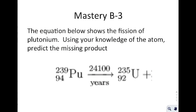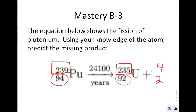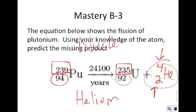The last slide says: the equation shows the fission of plutonium. Using your knowledge of the atom, predict the missing product. We know you can't create or destroy particles — conservation of mass. This indicates a total mass of 239 and a total mass of 235, so you're missing 4 for the atomic mass. Looking at protons: 94 protons on one side and 92 on the other — you're short 2 protons. With an atomic mass of 4 and atomic number of 2, that indicates a helium atom. This is an example of a nuclear reaction. Just using knowledge of the atom and nuclear symbol notation, you can predict the product of a nuclear reaction.